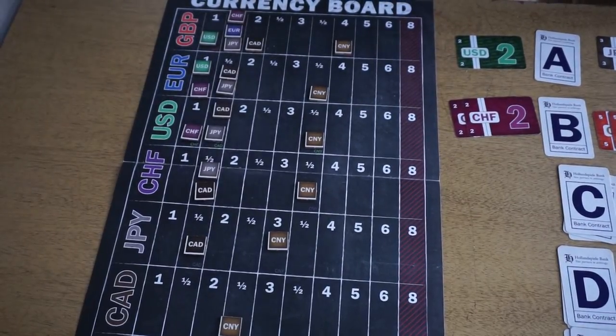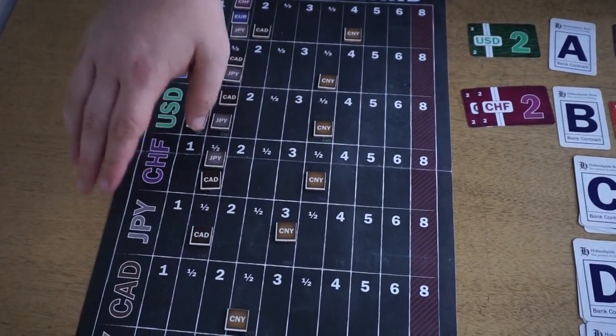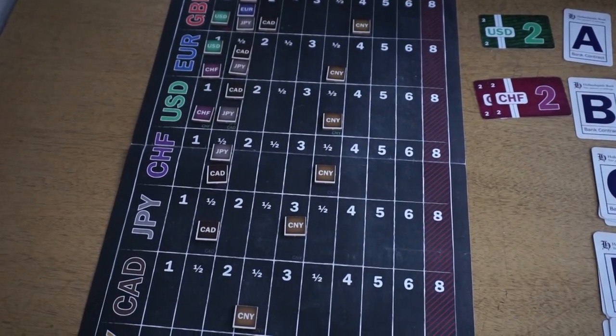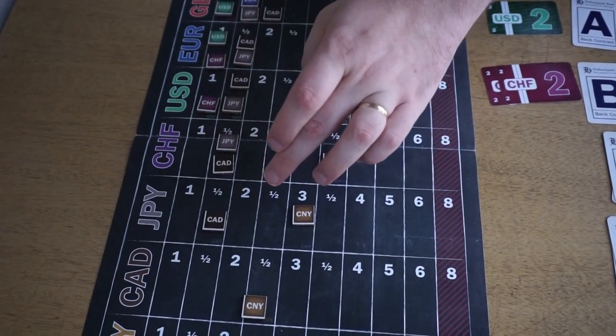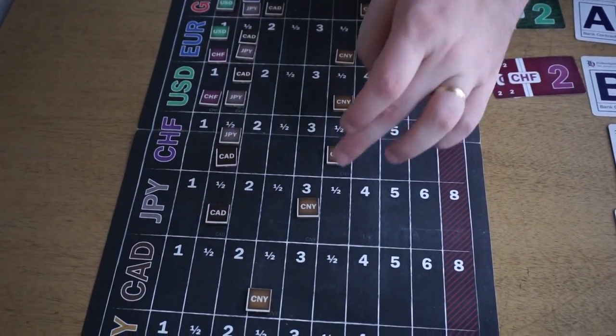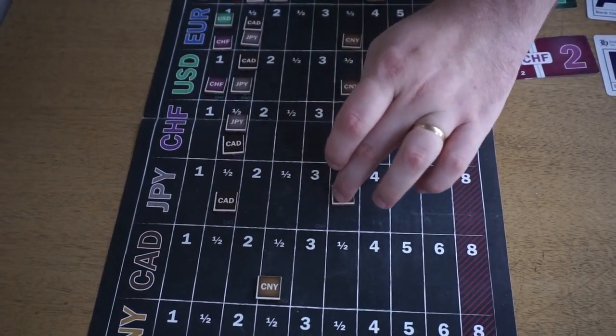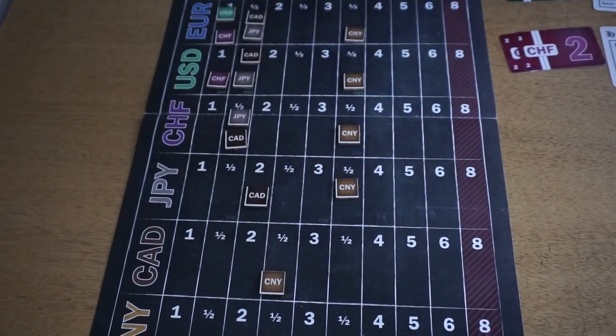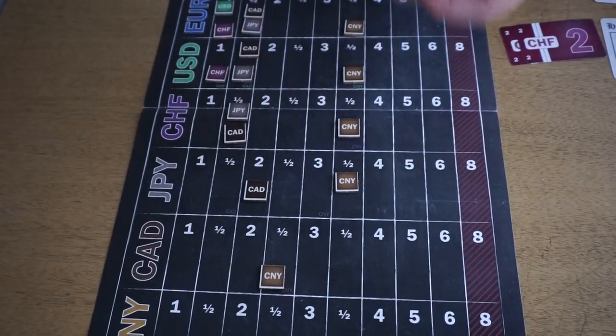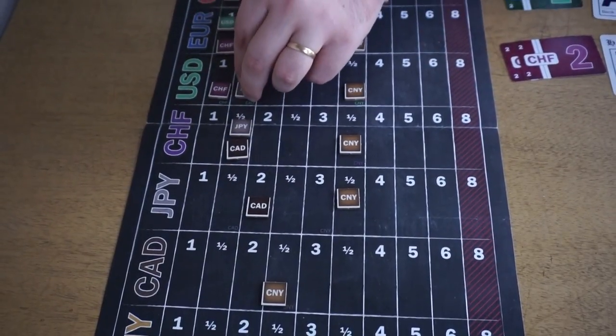So what does that look like? Let's say the JPY is strengthened. If that's the case, then any currency pair where it's the stronger partner, then the weaker currency is to move one space to the right. And then any currency pair in which it is the weaker partner, it's going to move one space to the left.